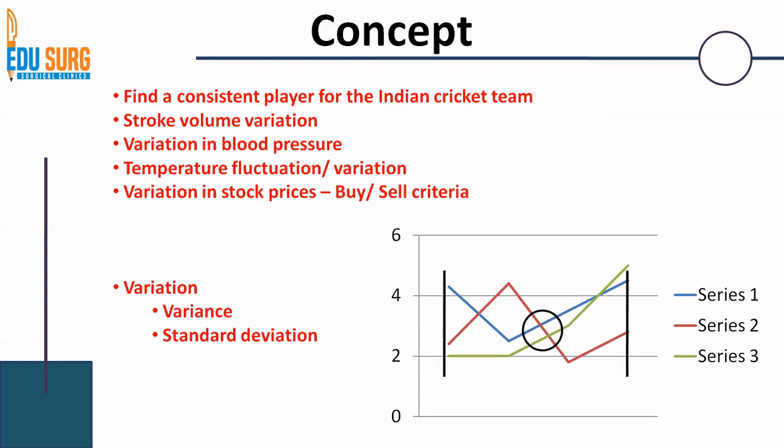Variance and standard deviation apply to a single sample and to multiple samples. When you have multiple samples, you can also look at a coefficient of variation. If you want to look at what is beyond the outer boundaries — one or two values that are outliers — that is given by the Z-score. So these are four terms to understand: variance, standard deviation (which is the square root of variance), coefficient of variation, and Z-score.